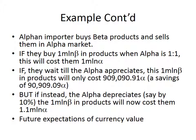The alpha importer buys beta products and sells them in alpha's market. If they buy one million betas' worth of products when alpha is at parity (1-to-1), this will cost them a million alphas. If they wait until the alpha appreciates by 10%, this one million betas' worth of products will only cost 909,090.91 alphas — a savings of about 90,000 alphas. If instead the alpha depreciates by 10%, the one million betas' worth of products will cost 1.1 million alphas.